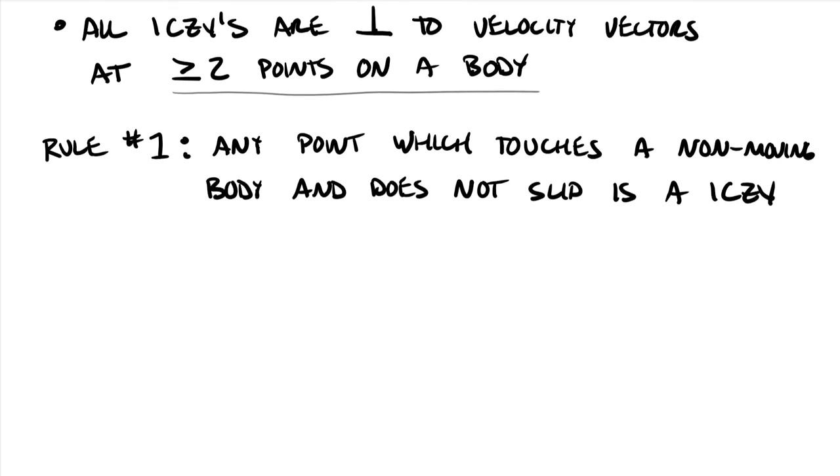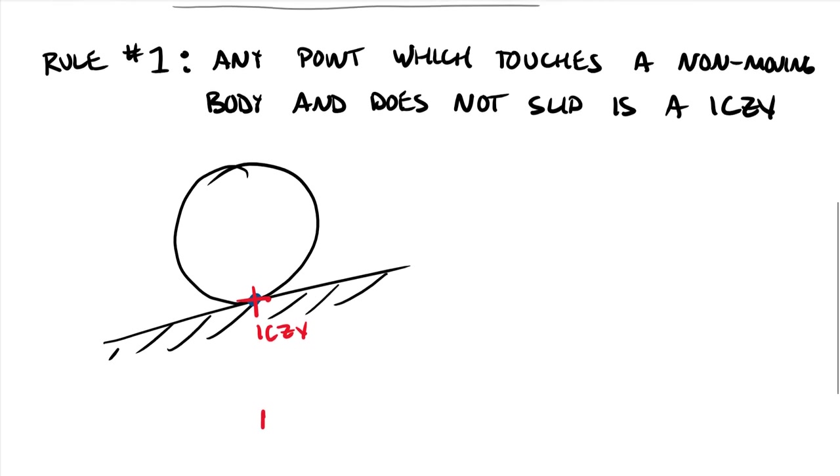So to give you a couple of examples of this, let's say that we have a wheel. This wheel is rolling down a surface, a non-slip surface. And so if the ground isn't moving, then at this contact point right here, this has to be an ICZV because the ground has zero velocity and also the wheel at that point will have a zero velocity.